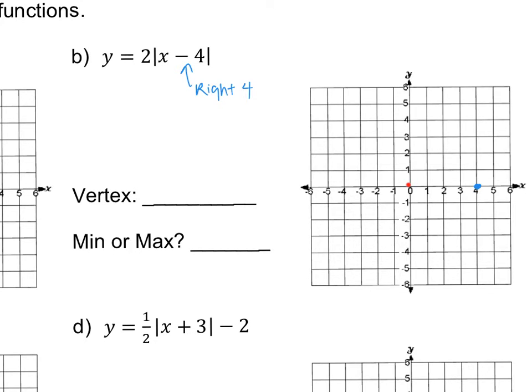So I'm going to go to the right 4, which leads me right here where my vertex is. Remember, you start at the origin and then move by your shift. So my vertex is at (4, 0). X is 4 and Y is 0 since it's sitting on the x-axis.